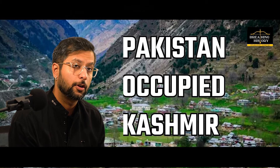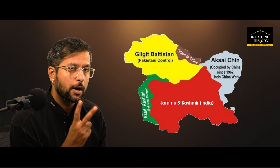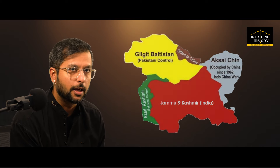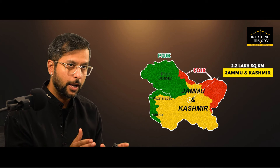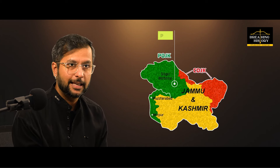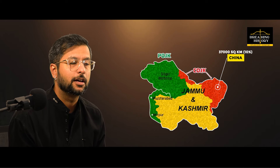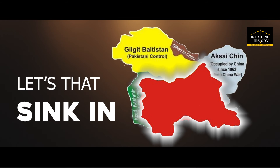Pakistan Occupied Kashmir, which is also called POK, is generally referred to the north-western region of Jammu and Kashmir that is occupied by Pakistan after a series of unfortunate events. There are two parts to POK: the Pakistan-controlled Kashmir and Gilgit-Baltistan. All of Jammu and Kashmir is 2.2 lakh square kilometers, out of which 30% — around 78,000 square kilometers — is POK, and 10%, which is 37,000 square kilometers, is under China. So right now, India only has 60% of Jammu and Kashmir. Let that sink in.